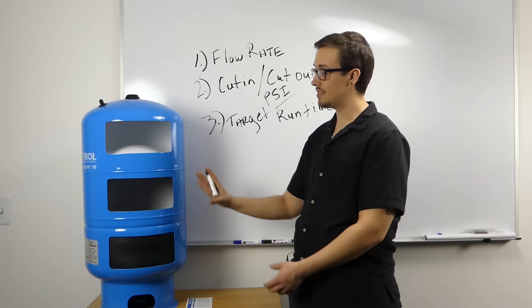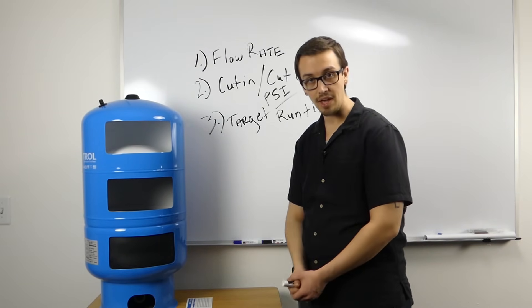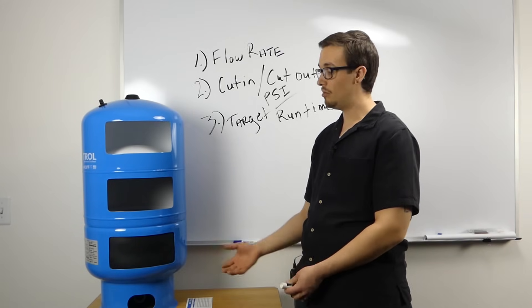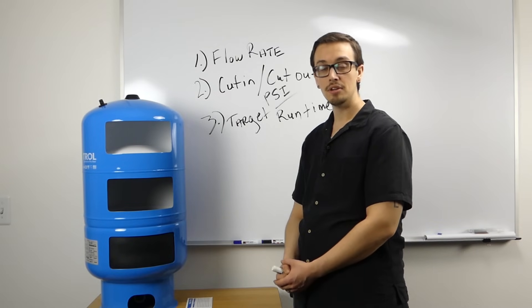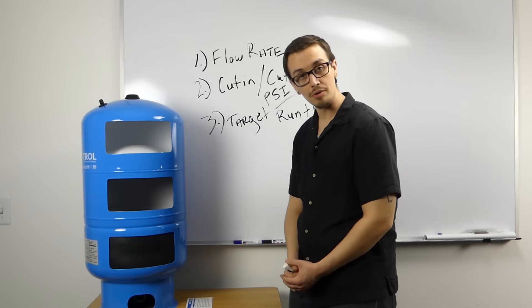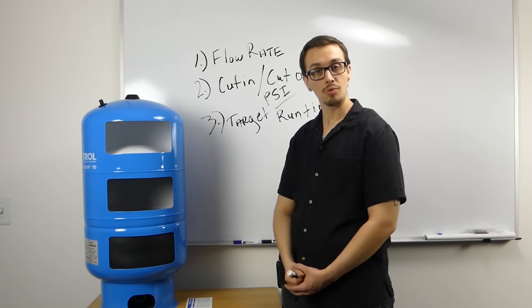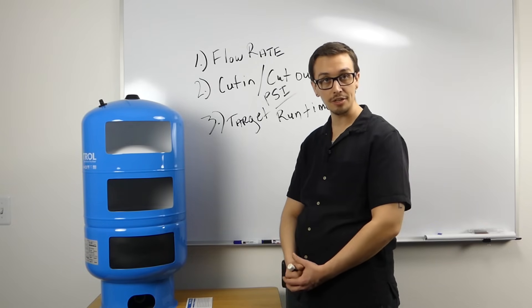Let's imagine that you have a system with this pressure tank and perhaps you've got a five gallon per minute pump. If this pump was in the middle of its drawdown capabilities, let's call that five gallons, your pump would have a one minute runtime. If that pump were below one horsepower, that would be within the recommended target range and this would be an appropriate pressure tank for that application.